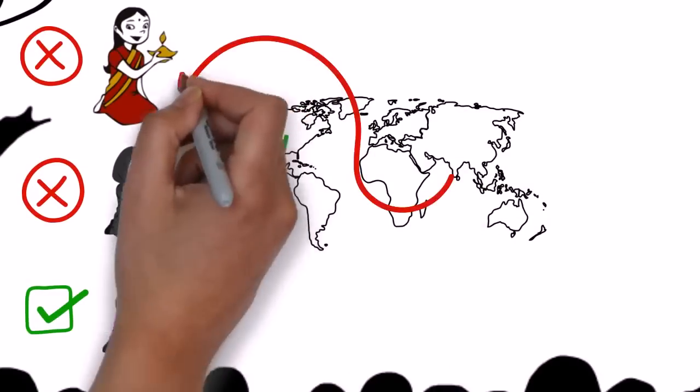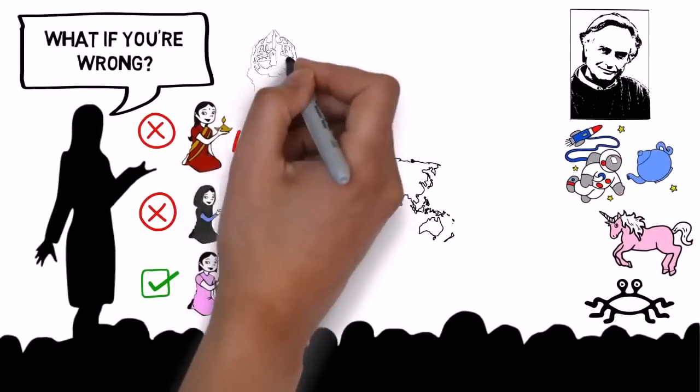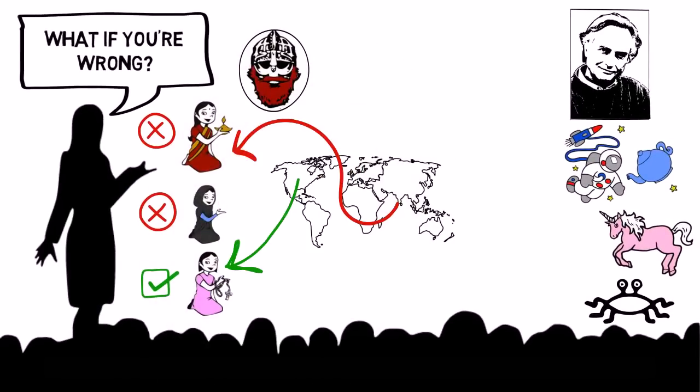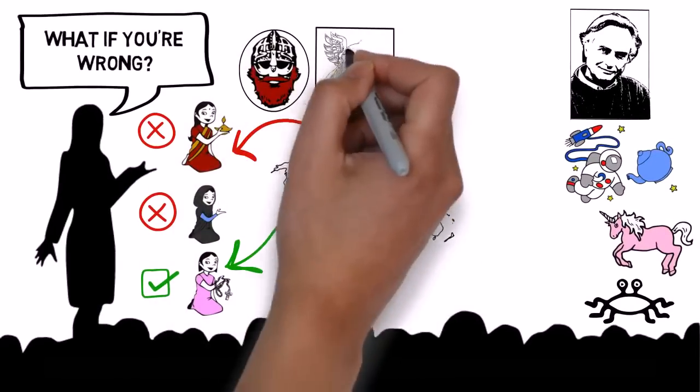If you'd been brought up in India, you'd be a Hindu. If you were brought up in Denmark in the time of the Vikings, you'd be believing in Wotan and Thor.